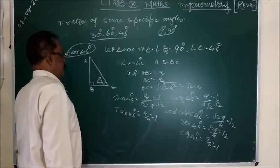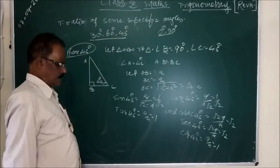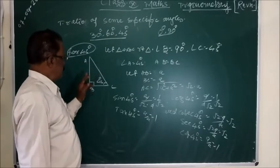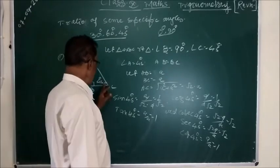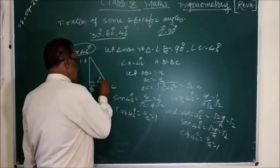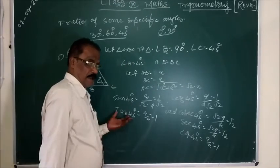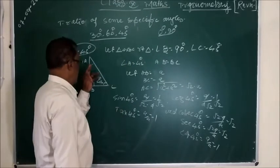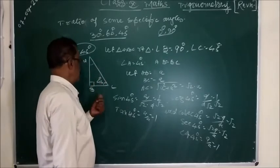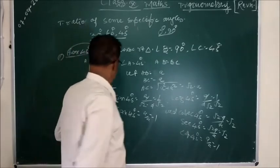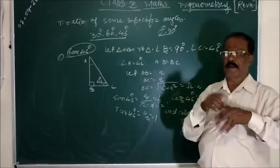All trigonometric ratios for 45 degrees, 60, 90 — like that. For 45 degrees, consider triangle ABC where angle B is a right angle and angle C is 45 degrees. If angle C is 45, then angle A will also be 45, because the sum of all three angles should be 180. One is 90, so the sum of the other two must be 90. This is 45, so the other will automatically be 45.